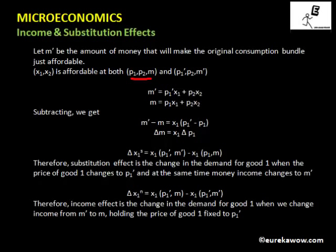For the Slutsky budget line, prices are changing. The price of good one changes from P1 to P1 dash, and the money income of the consumer changes from M to M dash. So we have P1 dash, P2, and M dash such that the original consumption bundle is just affordable.